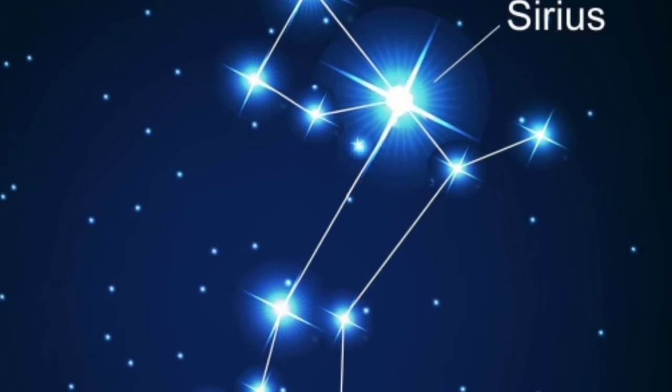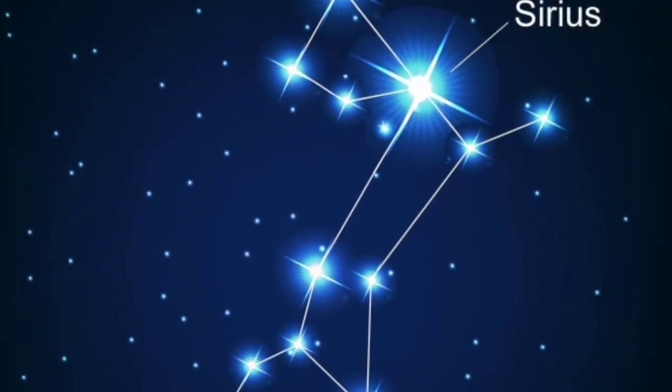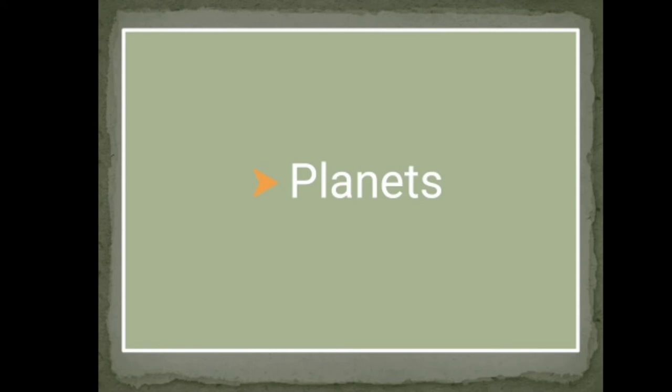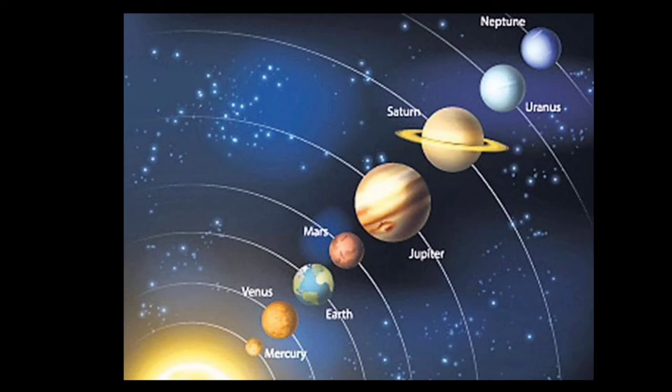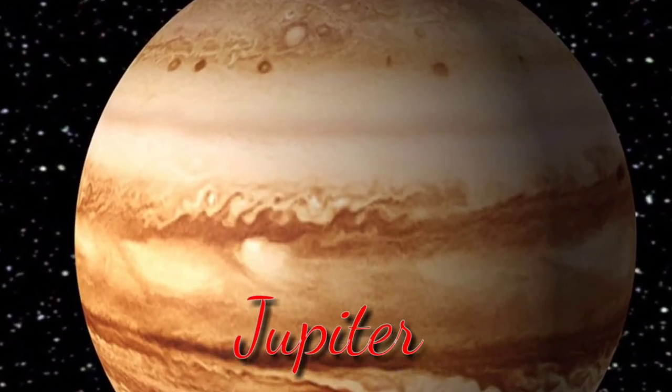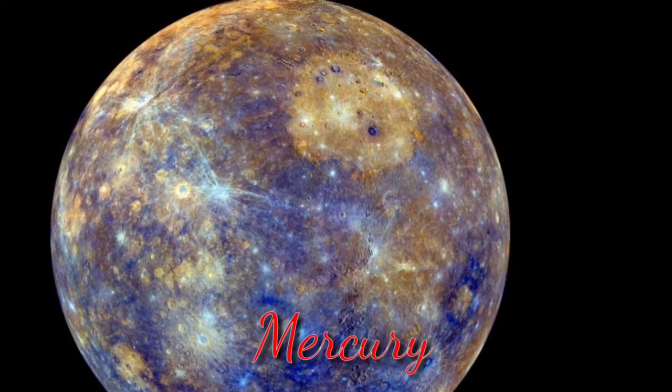Planets. Children, we have already known that there are 8 planets in the solar system. The 8 planets are Mercury, Venus, Earth, Mars, Jupiter, Saturn, Uranus, and Neptune. All the planets move around the Sun. The planets have no light of their own. The planets get heat and light from the Sun. Jupiter is the largest planet, and Mercury is the smallest planet in the solar system.